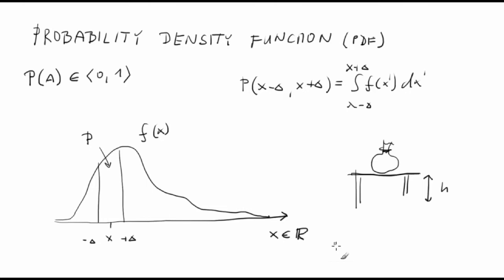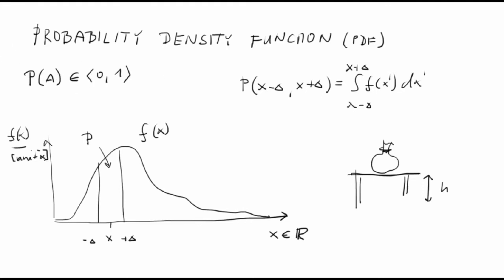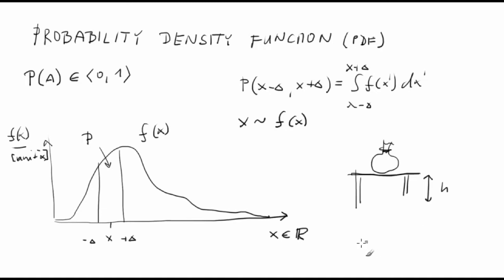Such a function is the probability density function, and its unit is the inverse of the unit of the variable x. Typically we say that x is distributed according to the probability density function f, and we denote this relation as x ~ f(x). Note that if x is a discrete variable, then the value f(x) is directly the probability to get an experimental outcome x. Both discrete and continuous variables are very common in particle physics.